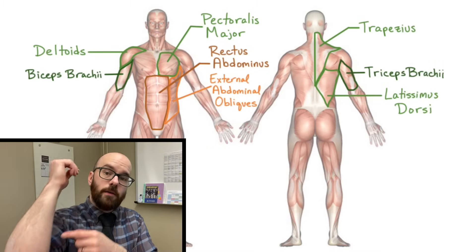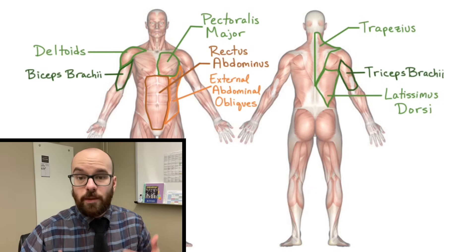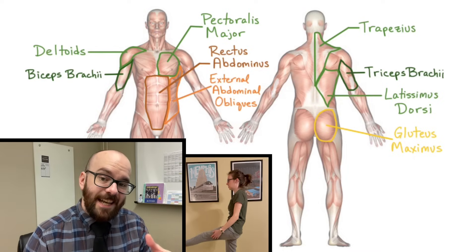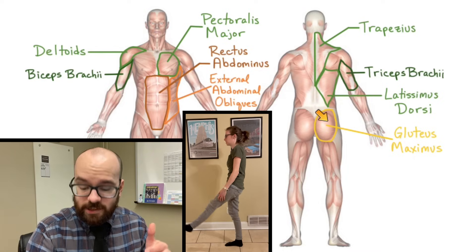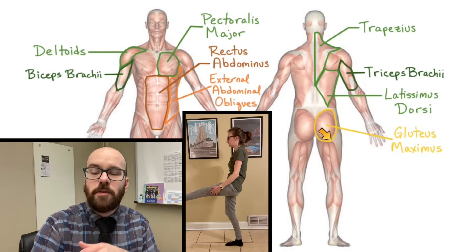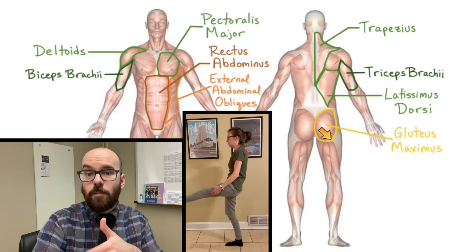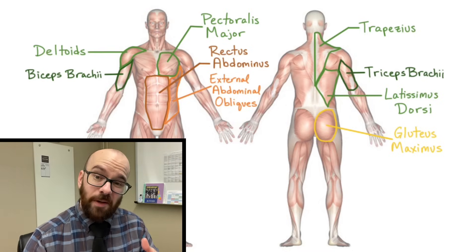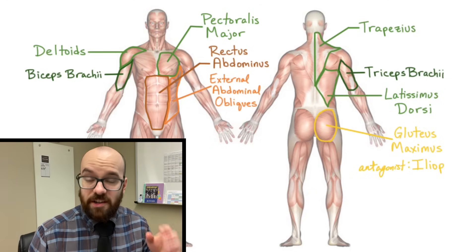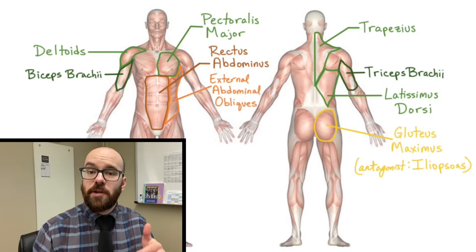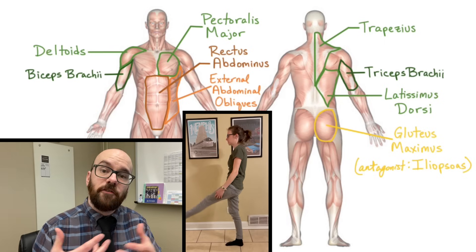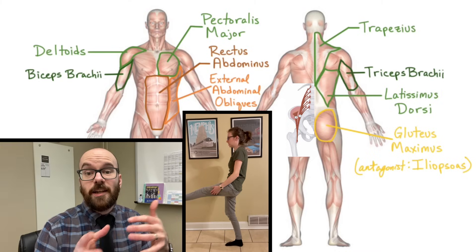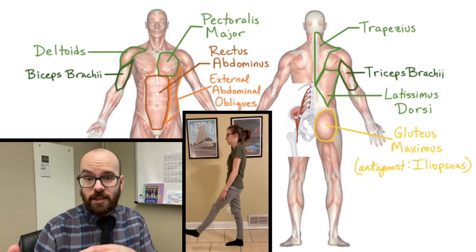Now let's look at the hip joint. The gluteus maximus extends the hip joint — straightening it out. It originates on the pelvis and inserts on the femur, bending the femur backward, or posteriorly. Its antagonist is the iliopsoas, an internal muscle that flexes the hip joint. So gluteus maximus extends the hip joint; iliopsoas flexes the hip joint.